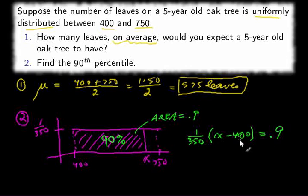So if we go ahead and multiply both sides of this equation by 350, we have 350 times 0.9 on the right, or 315. And on the left, we have x minus 400. Adding 400 to both sides, 715.